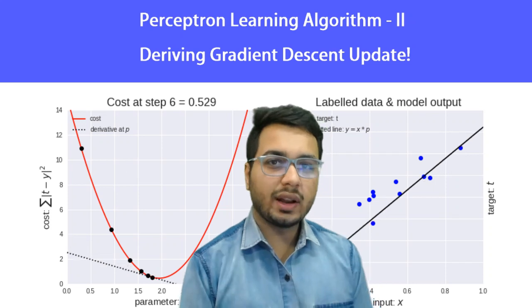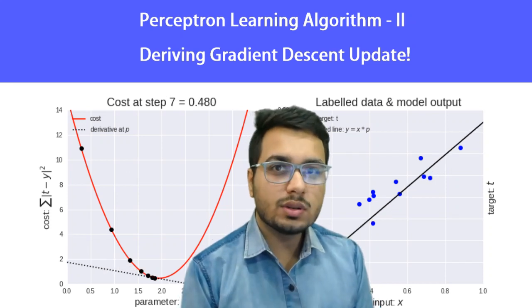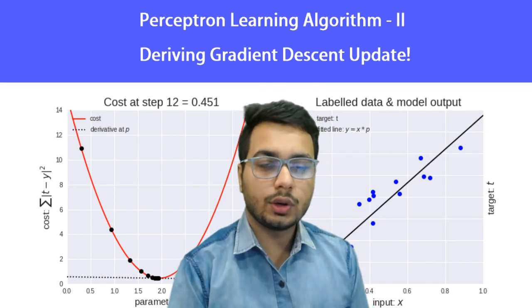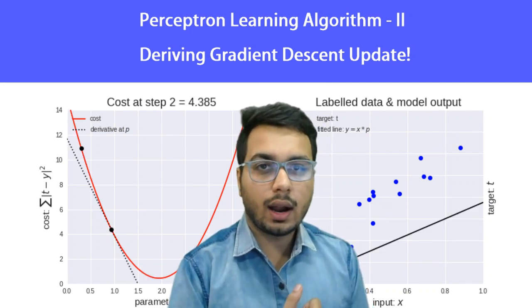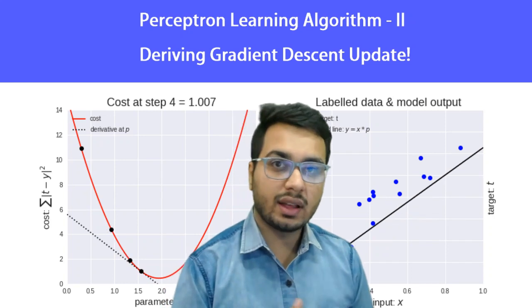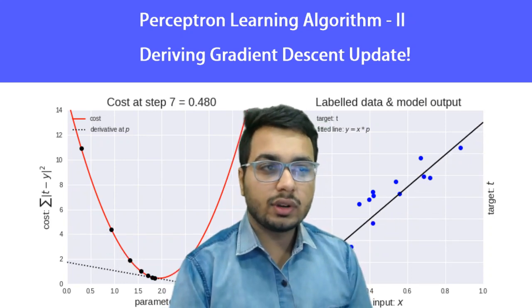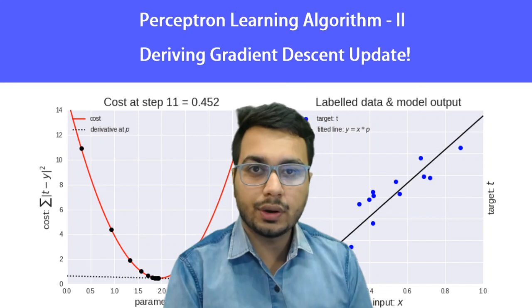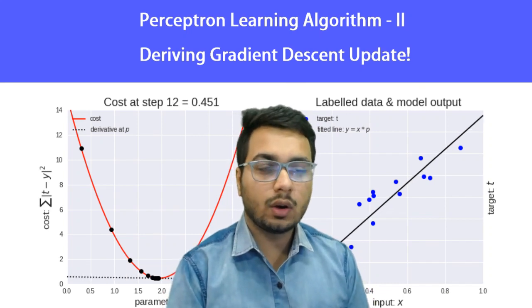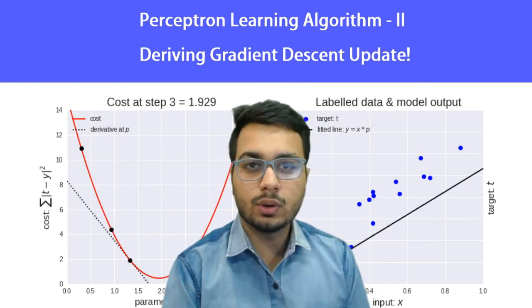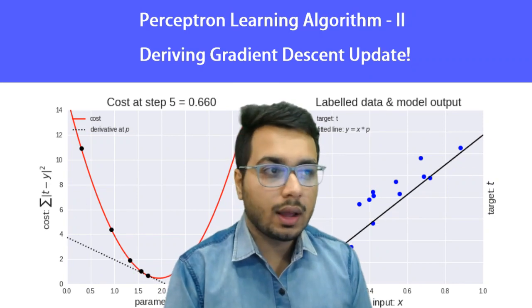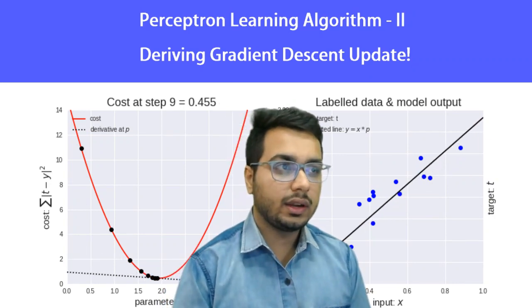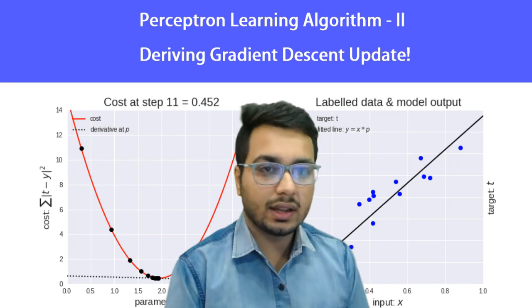Hi everyone, welcome to Part 2 of this video. In the last video we talked about what loss function should be used to train a perceptron and how the perceptron acts as a binary classifier. In this video our goal is to derive a weight update rule that will help us find the optimal set of parameters w for the perceptron, and we are going to use gradient descent to update the parameters.